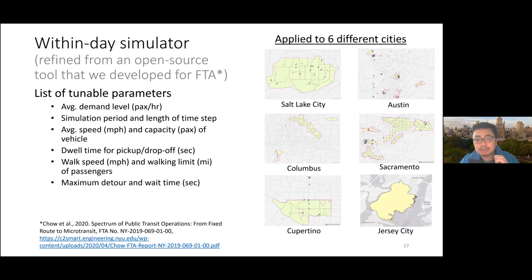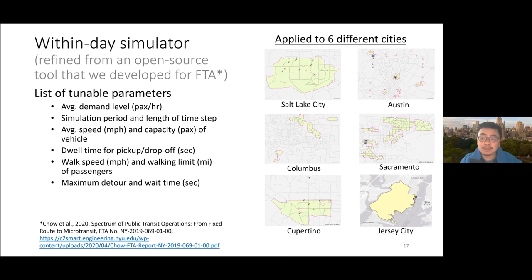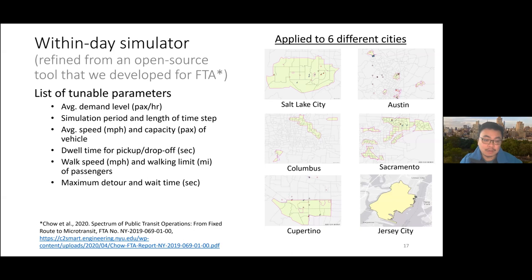We modified the simulator so that parameters are tunable — parameters like dwell time, walk speed, maximum detour wait time, and walking limit for passengers when considering virtual stops can be modified from city to city. This shows the inputs for the within-day simulator: general simulation parameters, scenario-specific parameters, system design parameters, and the required data inputs. VIA provided data for six cities, requiring approval from each city to share that data with us.